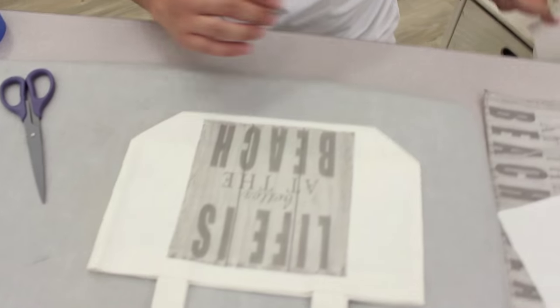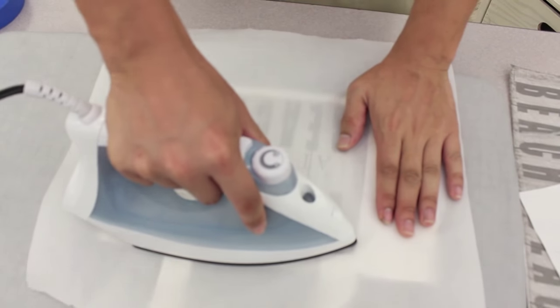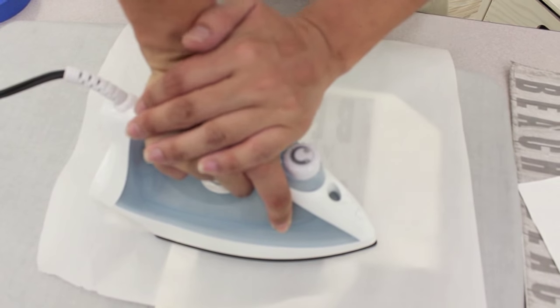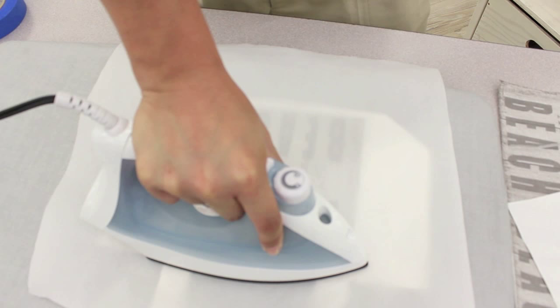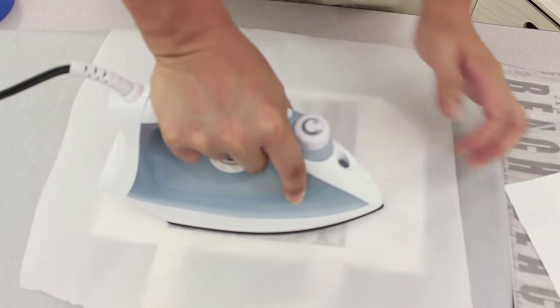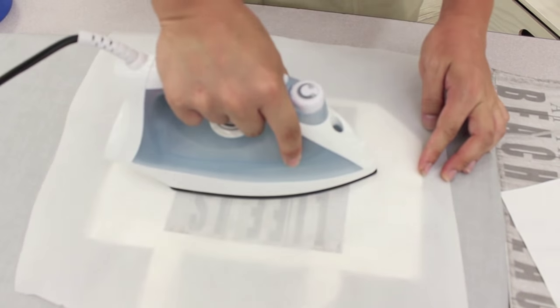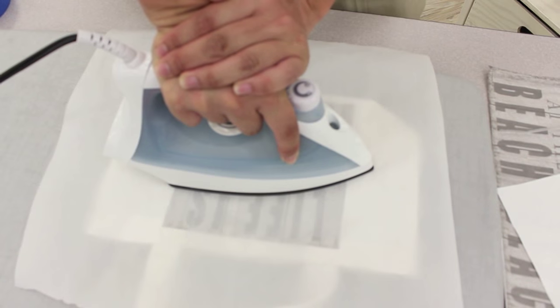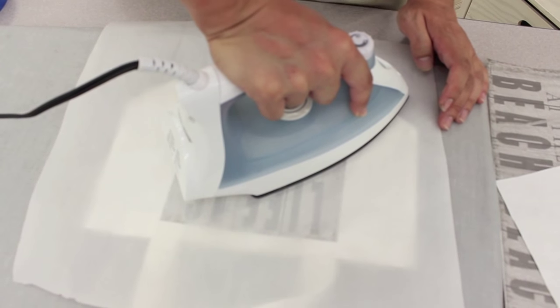Okay, now that we have it placed we put our parchment paper back on top and then place our dry hot iron, press firmly for about seven to ten seconds. And we're just moving right along.